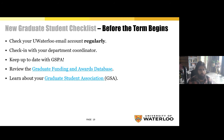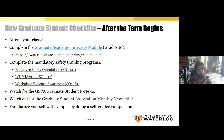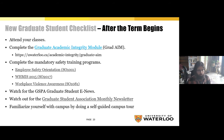Note that Student Financial Services (SFS) is no longer sending out checks, meaning you need to have your banking information updated with the university to receive any payments. After the term begins, begin your classes — see the GSPA important dates calendar for when classes start. Complete the Graduate Academic Integrity Module, also known as Grad AIM — you must successfully complete this Learn course within the first eight weeks of the fall term. The course will not be visible in Learn until the first day of classes, but it is highly recommended you complete it as quickly as possible once available.